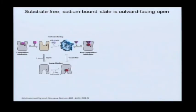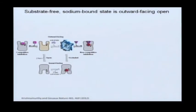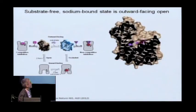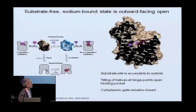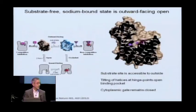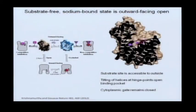In the sodium-bound APO state, the substrate site is entirely accessible to the outside — it's ready to bind substrate, and substrate can come on and off very rapidly. The conformational changes required to allow substrate access involve only small tilts in two helices around hinge points about halfway across the membrane bilayer. In this APO state, our cytoplasmic gate remains closed. That is, of course, what defines a transporter as opposed to a channel: transporters must have at least two gates that open in a mutually exclusive fashion. We can see how the external gate can open, yet the cytoplasmic gate remains closed.